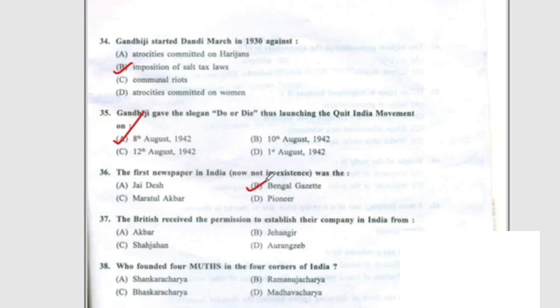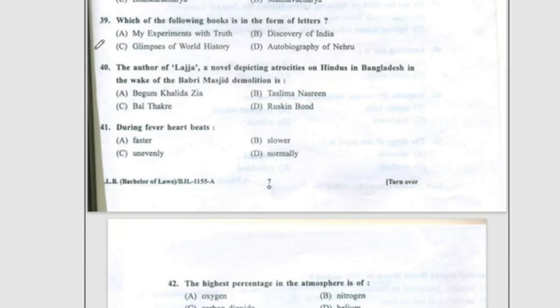Question 37: The British received permission to establish their company in India from Jehangir, option B. Question 38: Shankaracharya founded four Maths in the four corners of India, option A. Question 39: The book written in the form of letters is Glimpses of World History, option C. Question 40: The author of Lajja, a novel depicting atrocities on Hindus in Bangladesh in the wake of the Babri Masjid demolition, is Taslima Nasrin, option B.